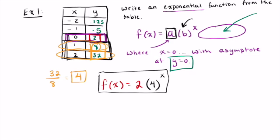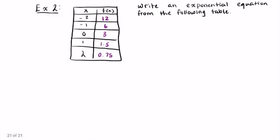So again, we find our b value by taking our second y term and dividing it by our first. And we find our a value by looking at where x equals 0. All right, so let's look at another example real quick.